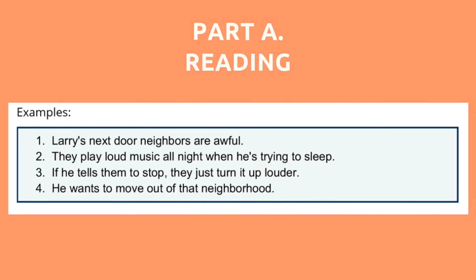Let's talk about Part A a little bit more. Most of the time it's going to be 8 sentences, sometimes 12 or even more. The sentences are grouped into four — the first four are related to each other; they form a story or paragraph. This will help you determine how to read the sentences because you know one sentence is related to the next. So for example, Versant will ask you to read the first sentence and you can simply say "Larry's next door neighbors are awful" — it's like telling a story.